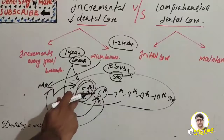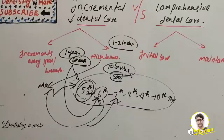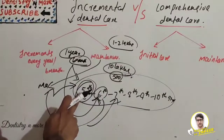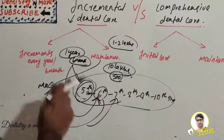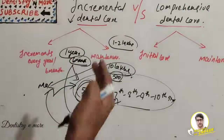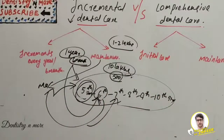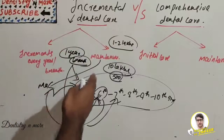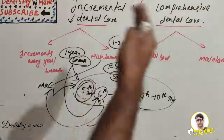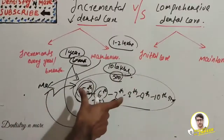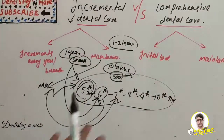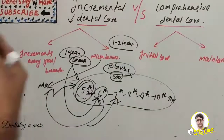Maintenance care means if there is any restoration failure, complication, or incomplete treatment that has occurred, we can correct it — it requires very little money and time. In the second year, we provide maintenance care to the previous fifth standard students now in sixth standard, and treatment for the new fifth standard intake. In the third year, we provide maintenance to the seventh standard and treatment again to the fifth standard, as new students have joined. This continues until the entire school is covered.